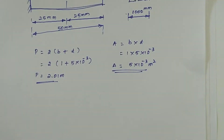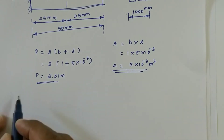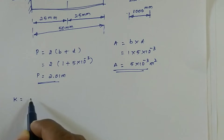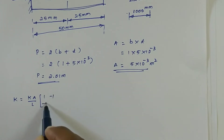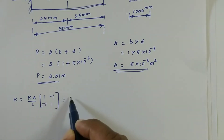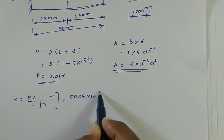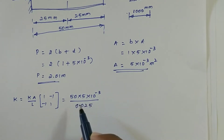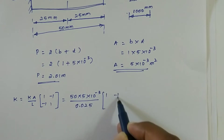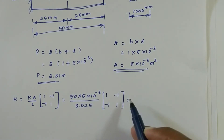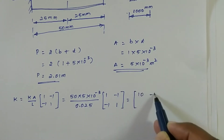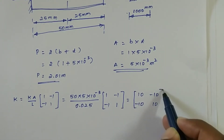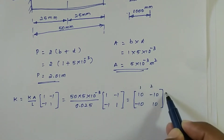Now the thermal conductivity matrix. K is equal to (K·A / L) times the matrix [+1, −1; −1, +1]. K is 50, area is 5 into 10 power minus 3, divided by length. Since we are splitting into 2 elements, length is 25 mm, that is 0.025 meters. After simplification this gives the matrix [10, −10; −10, +10]. Since element 1 is made up of nodes 1 and 2, we mark this as 1, 2.